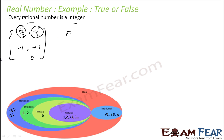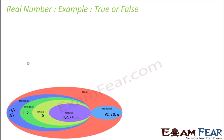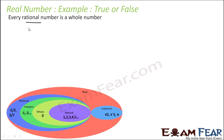Minus 1/2 is also not an integer, so 'every rational number is an integer' is false. But if you change 'every' to 'some,' the statement 'some rational numbers are integers' is true, because minus 1 is a rational number and it is also an integer.